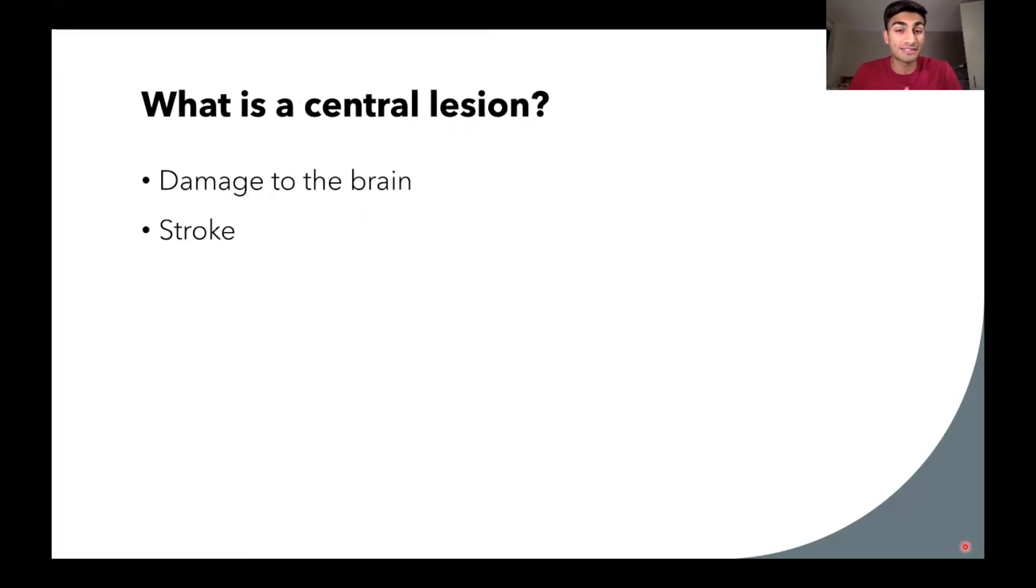So next, what do we mean by a central lesion? When we use this term, we're referring to damage to the brain because that's part of the central nervous system. Specifically, the kind of damage that we're going to be talking about is a stroke. A stroke results when there's a lack of blood flow, so when blood can't get to a part of the brain, there'll be death or damage to those brain cells.